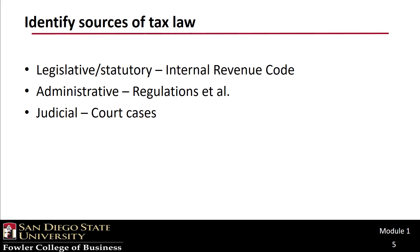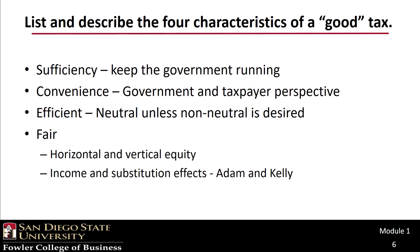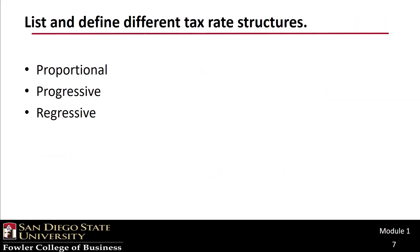We briefly discussed where tax law comes from. We did our best to believe there could be something like a good tax, and the four characteristics. We talked about how these characteristics lead to different types of rate structures, and how these rate structures might work through the lens of Luke and Manny and Cam and Mitch.